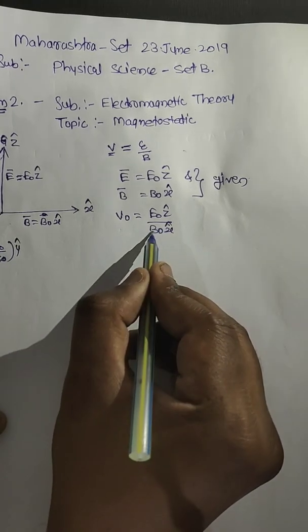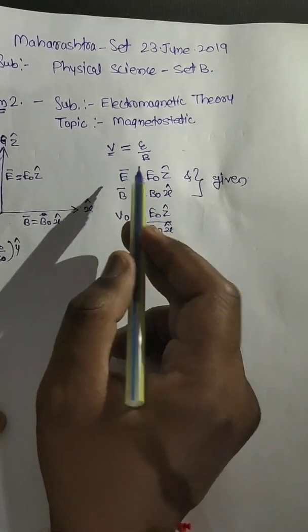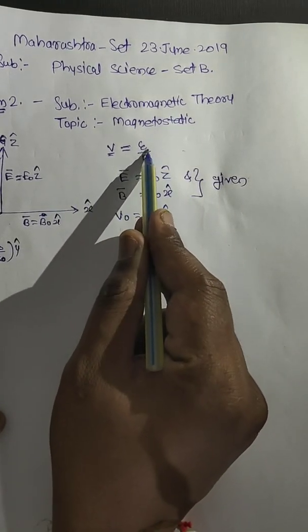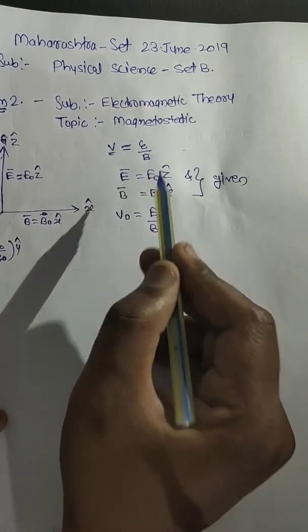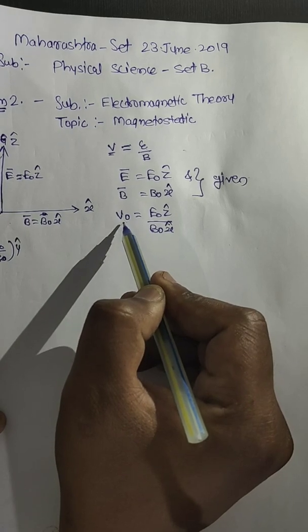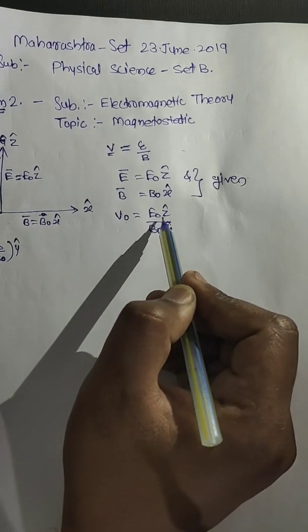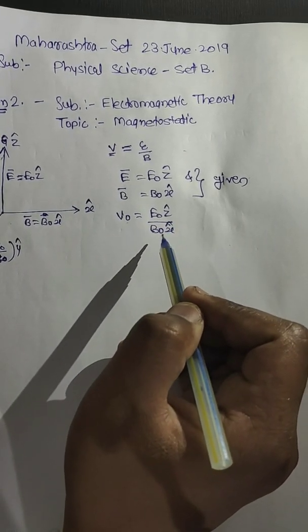V is equal to E upon magnetic field upon magnetic force field upon magnetic field. So on that basis, V₀ is equal to E₀ in z cap upon B₀ upon x cap.